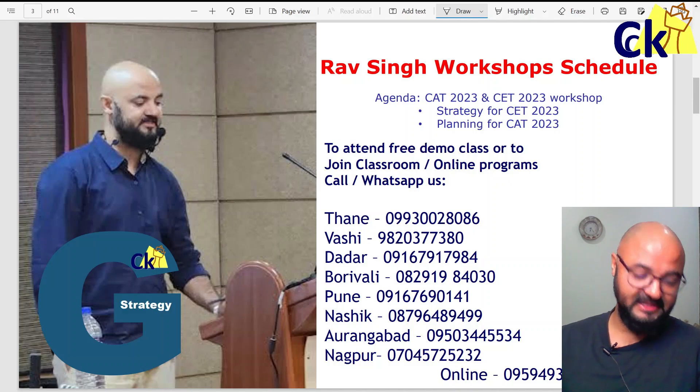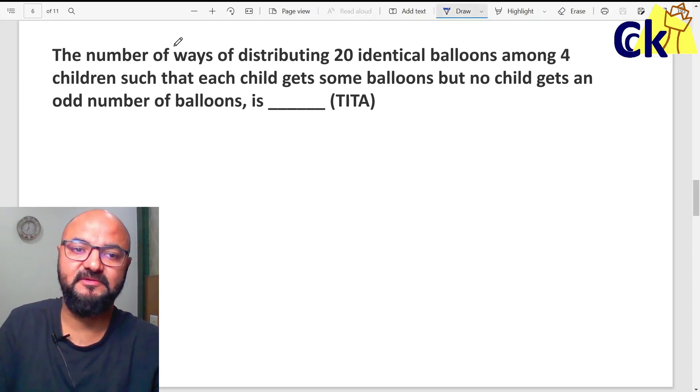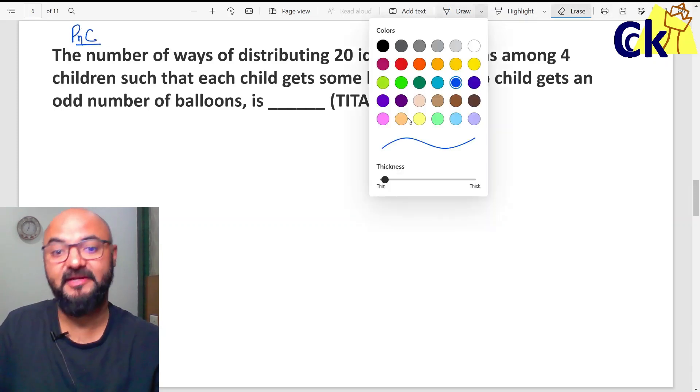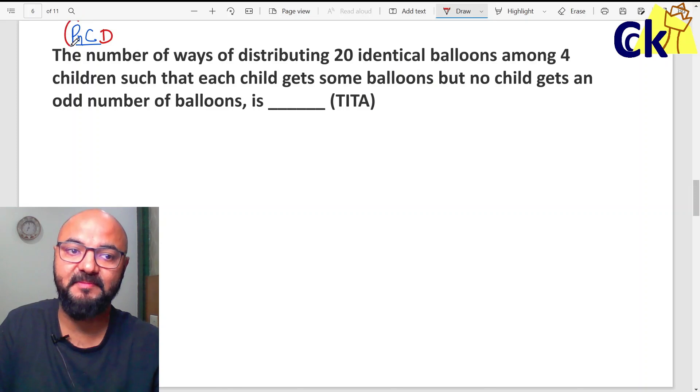Let me give you a demo lecture of this topic based on CAT 2022 question. Let's look at this question now. Permutation combination - examiner ko pata lag chokya ki people avoid PNC. But there are still some people who will do PNC. Toh mein us me distribution karte ho. There are three topics: permutation, combination, distribution. This question is based on distribution.